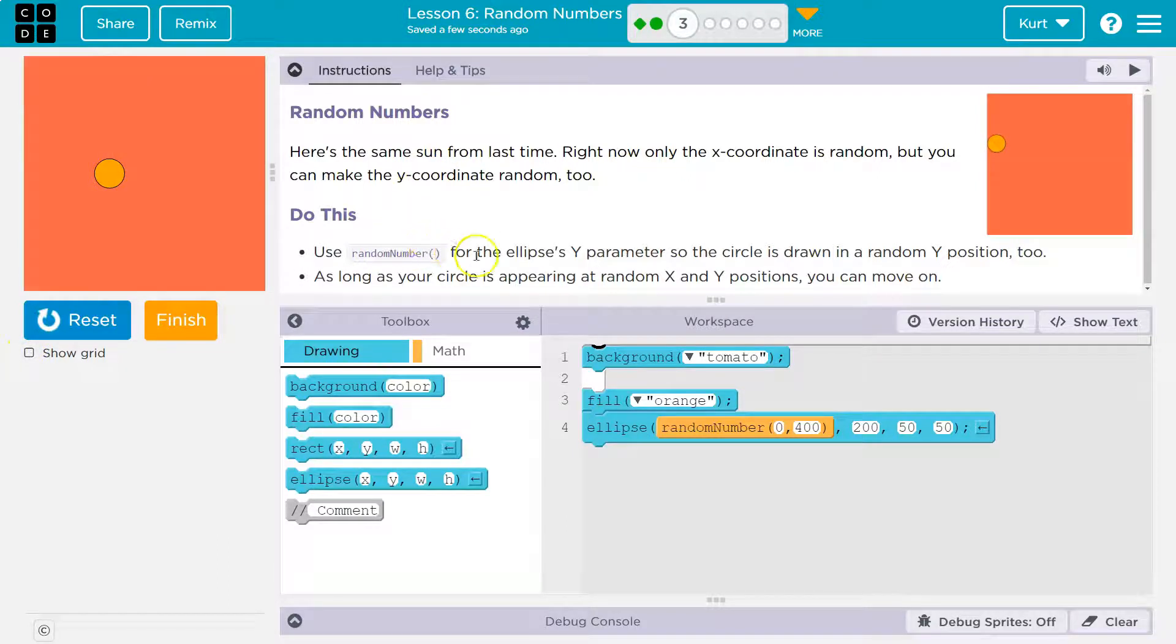All right, so for the y, use random number for the ellipse y parameter. So the circle is drawn at a random y location. Now remember, parameters are these areas here. Anything that goes in these parentheses, that's a parameter. It's an option we control.